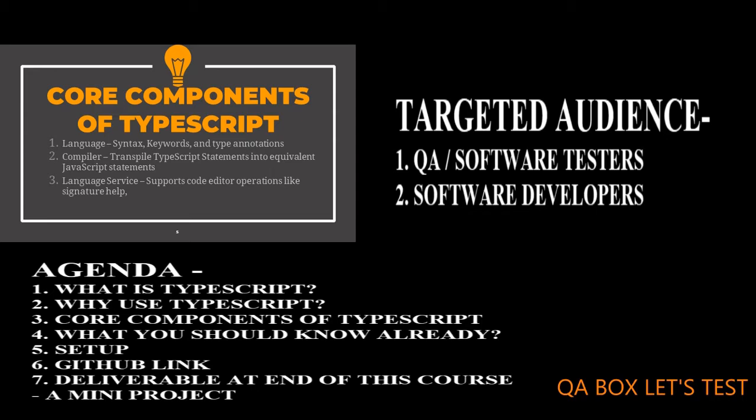What are the core components of TypeScript? Number one is the language — it comprises syntax, keywords and other annotations. Number two is the TypeScript compiler, TSC, which converts instructions written in TypeScript to their JavaScript equivalent. Number three is the TypeScript language service, which exposes an additional layer around the core compiler pipeline for editor-like applications, supporting statement completions, signature help, code formatting and outlining, colorization, and more.